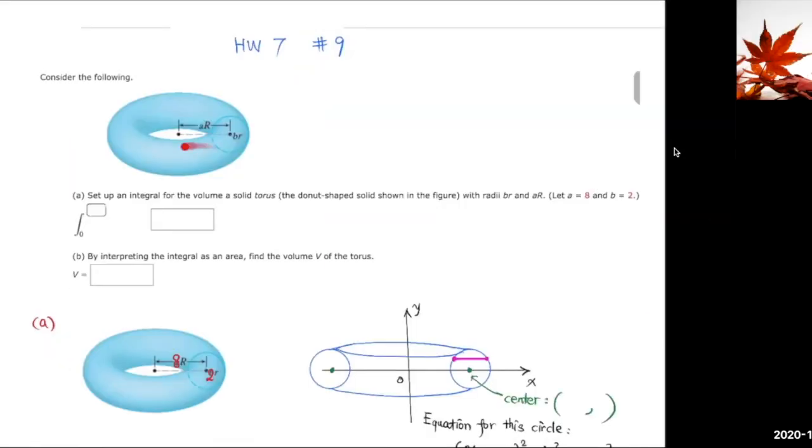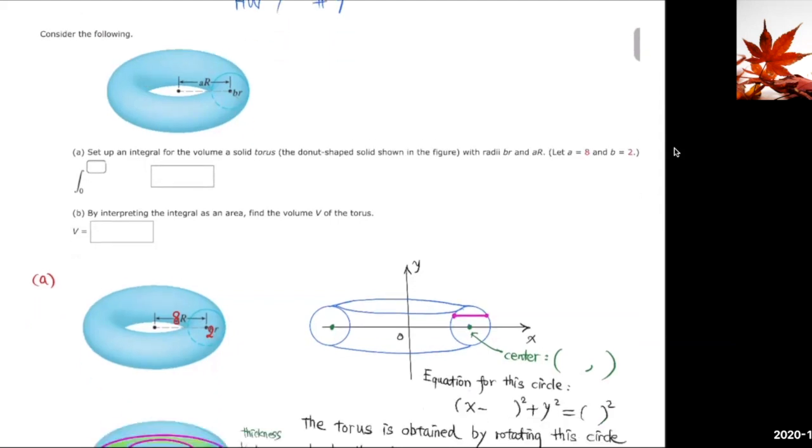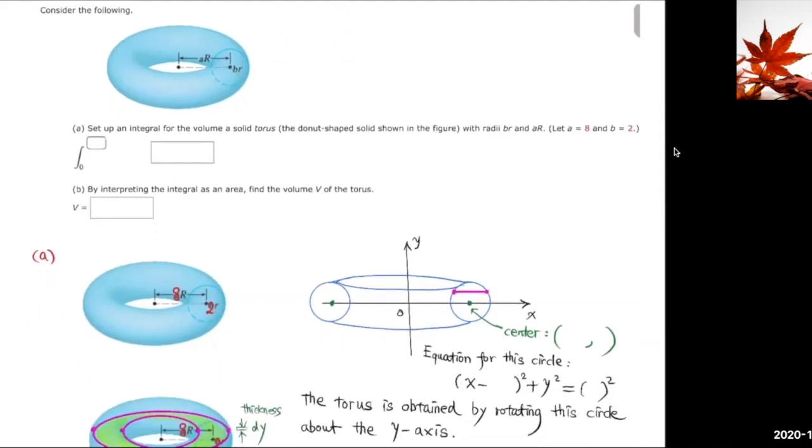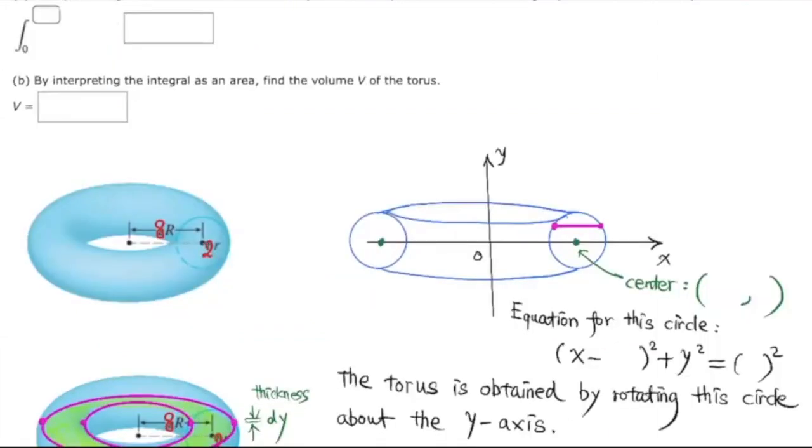Here is the solid torus, which is the donut-shaped solid. Given that the radius for this core section, this circle here, is 2r, and given this radius from here to here is 8r, we try to find the volume of this solid.